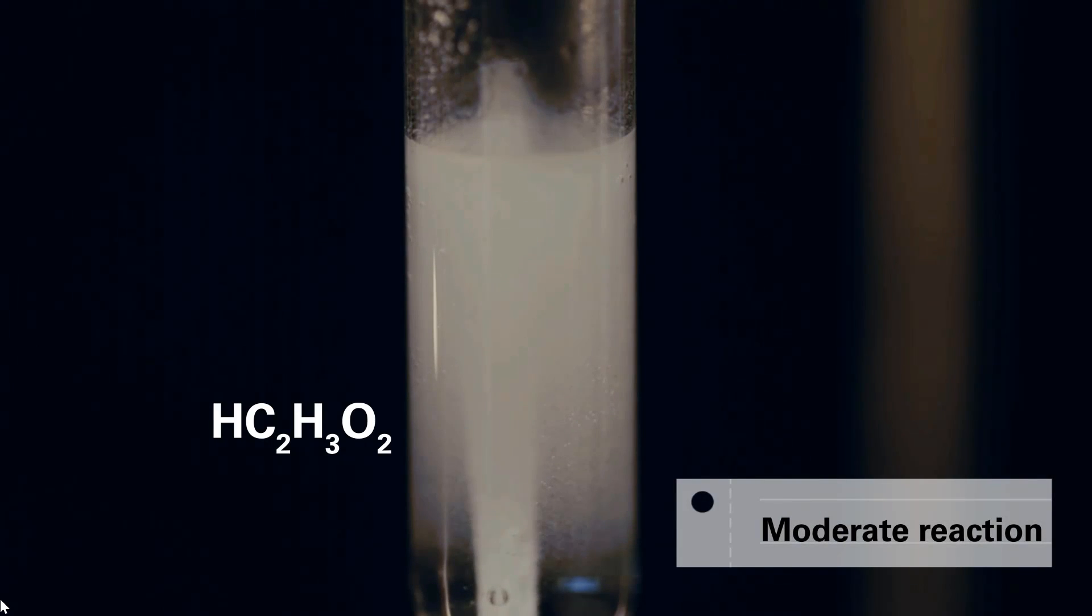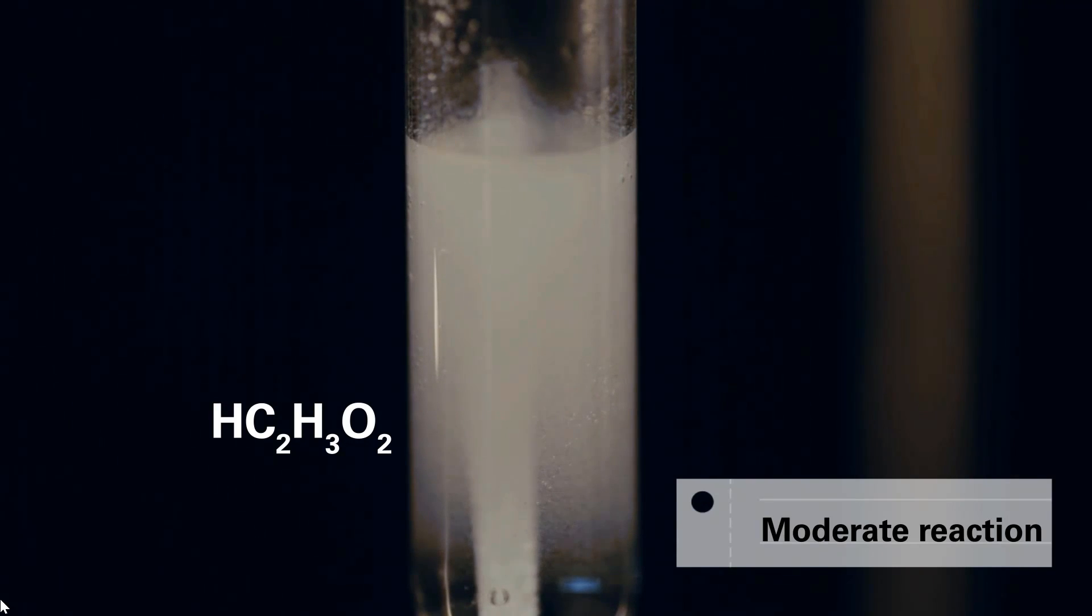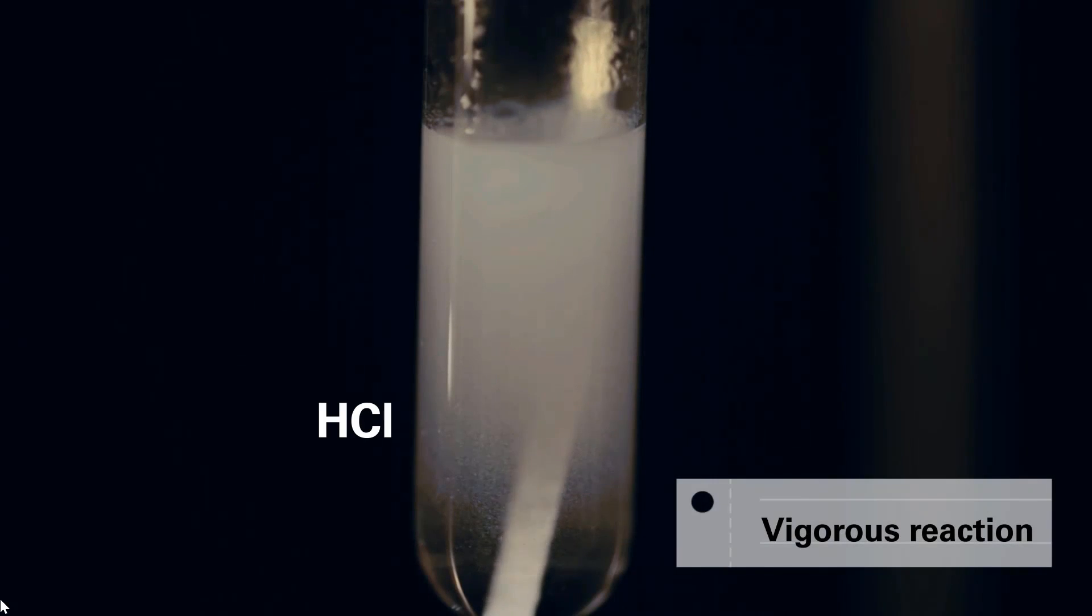This test tube, with acetic acid, is forming a nice amount of bubbles on the magnesium strip. This test tube, with HCl, is reacting very vigorously at the magnesium strip to form hydrogen bubbles.